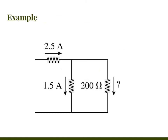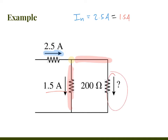Here's an example of how that would look. You've got 2.5 amps of current going into a junction. You're going to have some other current going out through two wires. You know the current in equals 2.5 amps, and that has to equal the current going out: 1.5 amps on one side, plus the current through the other resistor — the 200-ohm resistor. Solving, you subtract 1.5 amps from each side to get that current equals 1 amp.